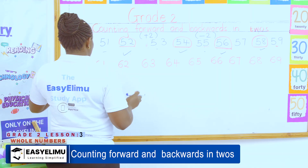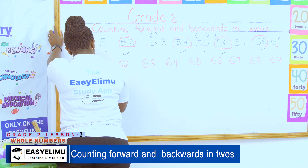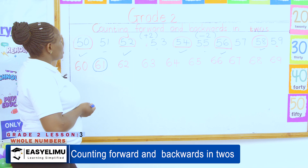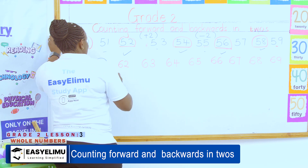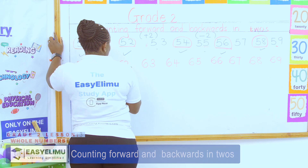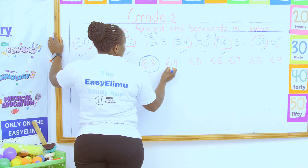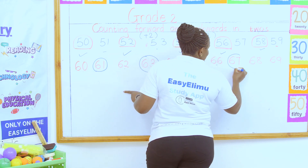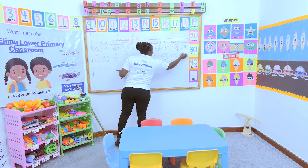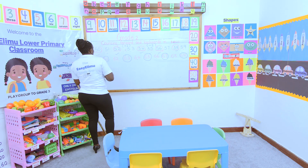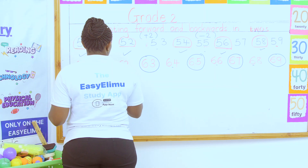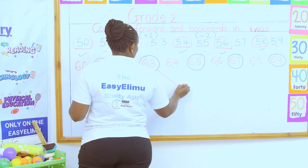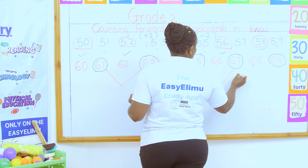Now, what happens here? If I've been told: from 61, count in twos up to 70 — so I'm saying 61, then I count 62, 63, 64, 65, 66, 67, 68, 69. The same numbers, we can use a vertical zigzag line. We can use a zigzag line.